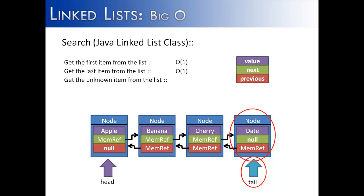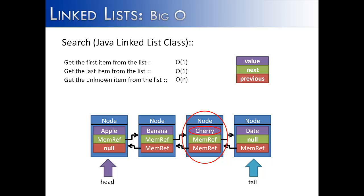Lastly is getting an unknown item from the list — meaning, what if I wanted the second or the third item? In this case, I want the third item in the list. It's going to be a Big O of N, where N refers to the size of the list. I would have to search through the list for the item: apple — no, refer to the next node; banana — no, refer to the next node; and finally I find cherry. That's a Big O of N because I have to perform that search to find the node. With the first and last node, I know where they are and can return those items without performing a search.